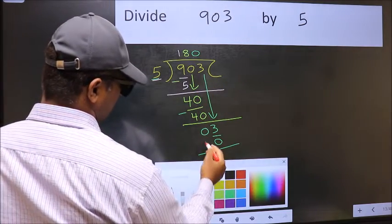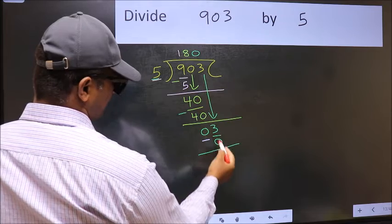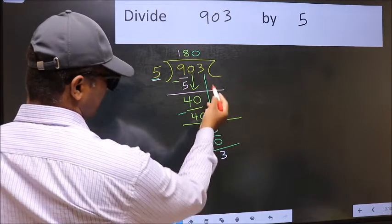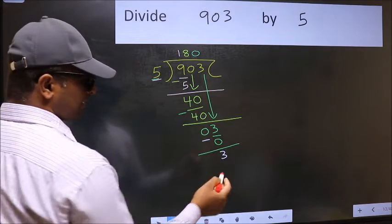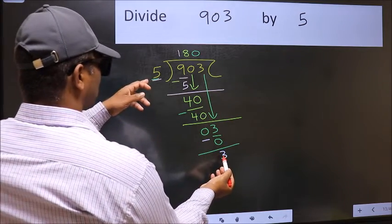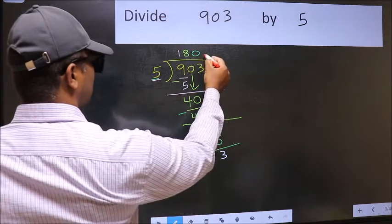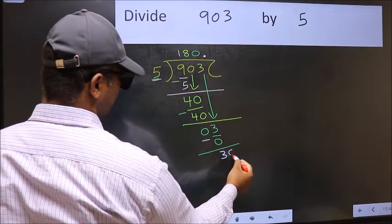Now you should subtract. 3 minus 0, 3. Over here, we did not bring any number down, and 3 is smaller than 5. So now you can put dot and take 0.